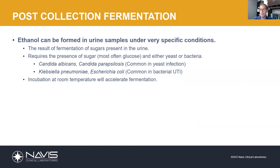The first thing we need to discuss is a phenomenon known as post-collection fermentation. This refers to the fact that ethanol can be formed in urine samples under very specific conditions. This is the result of fermentation of sugar that's present in the urine — and that's where diabetes comes into the equation. In diabetics, in many cases, they're producing urine that's loaded with glucose. They're not controlled and they're excreting glucose into their urine. There's our sugar source.